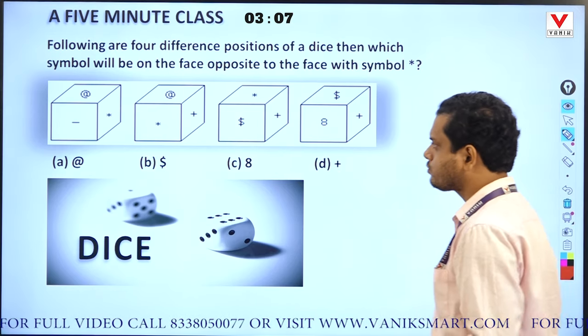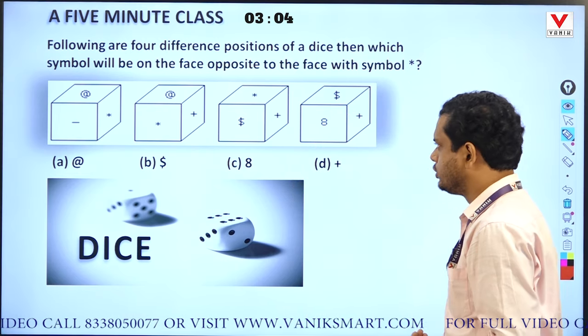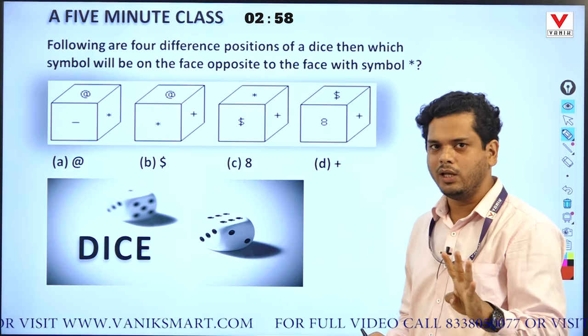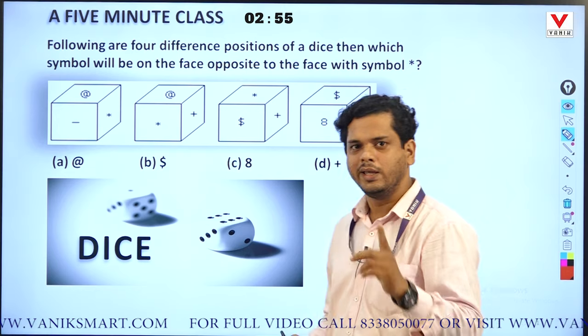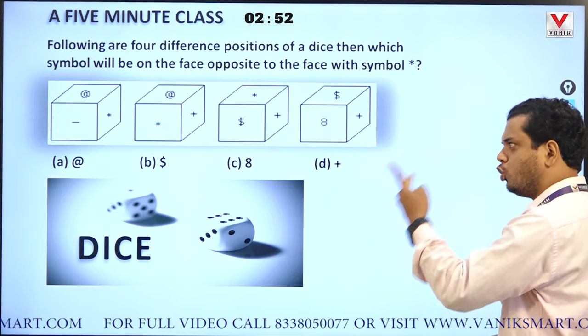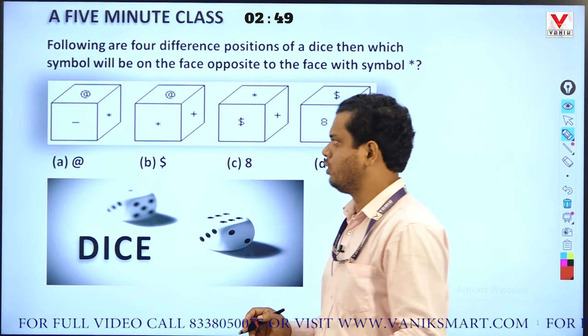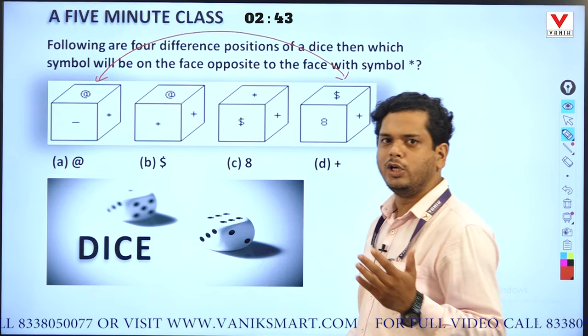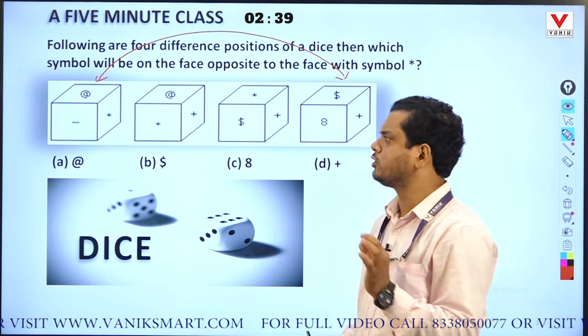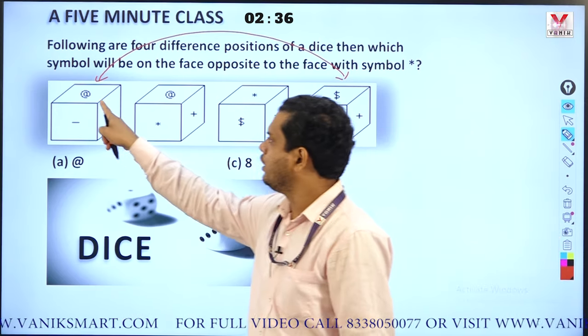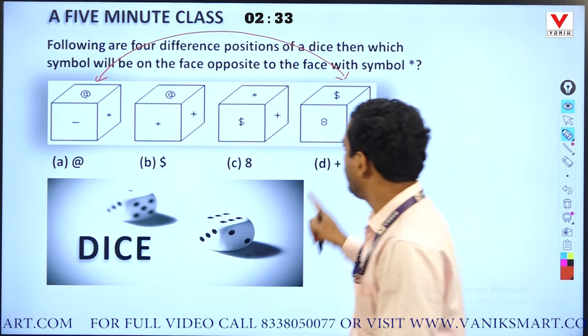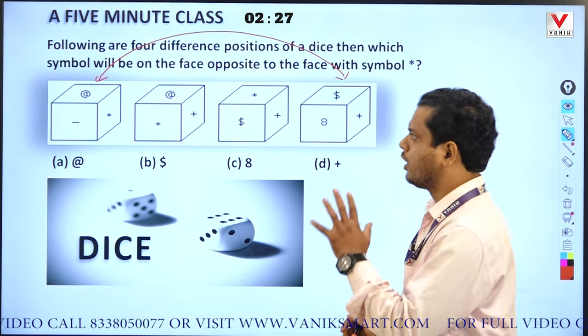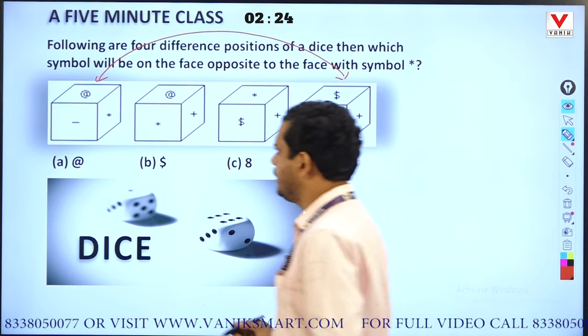Let's move to the next question. We found star's opposite. Now another case: four dice in different positions. The key is if there are two dice with no face in common - no common face between them. Here star, minus, dollar, eight, plus - none of these faces are common between these two dice positions.